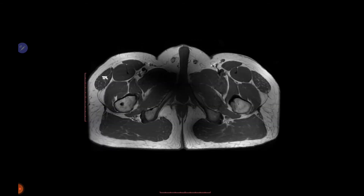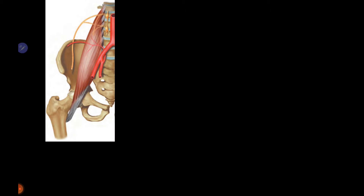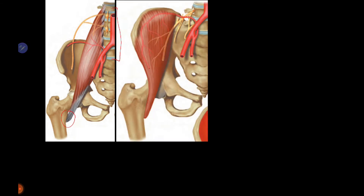Those were the three lateral quadrant muscles. Now the four anterior quadrant muscles: first is the psoas major muscle, which arises from the transverse processes and vertebral bodies of the lumbar spine. It is a bulky muscle that inserts over the lesser trochanter. The iliacus muscle arises from the iliac fossa and also inserts over the lesser trochanter by forming a conjoined tendon with psoas major.